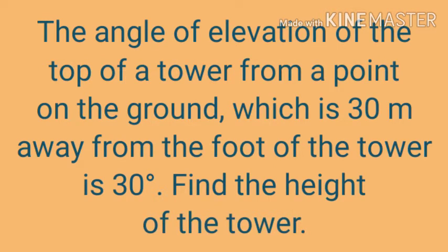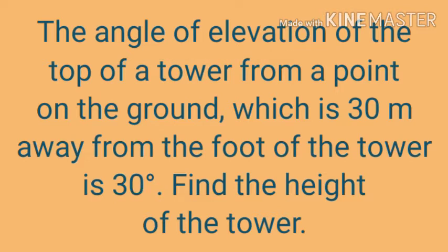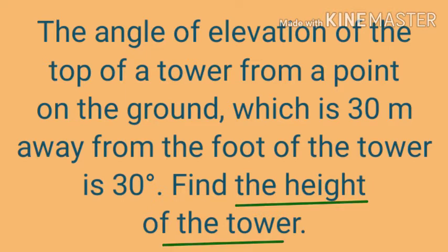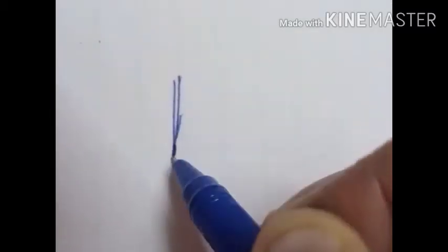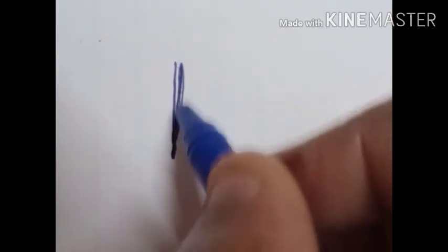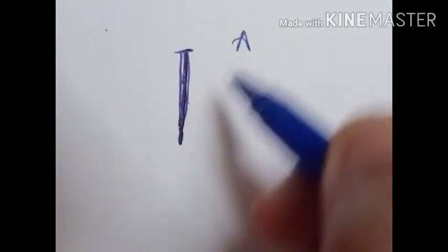In the question it is given that the angle of elevation of the top of a tower from a point on the ground which is 30 meter away from the foot of the tower is 30 degree, and we have to find the height of the tower. In this question, figure is not given, so we should draw the figure first. This is the tower — we represent the tower by the vertical line. This is the top of the tower. We can name it as AB.